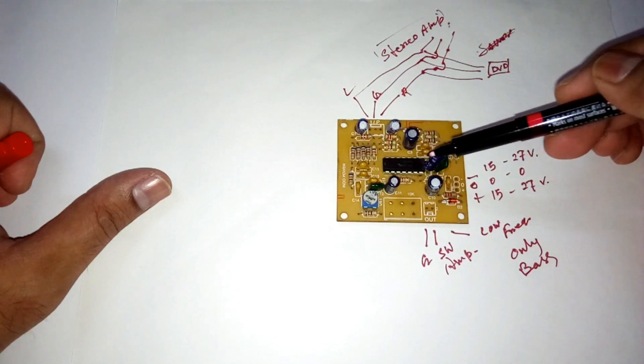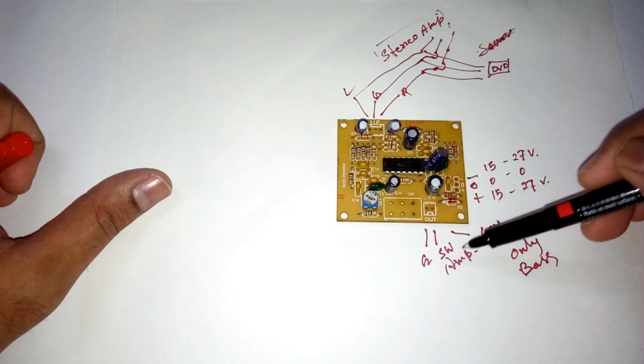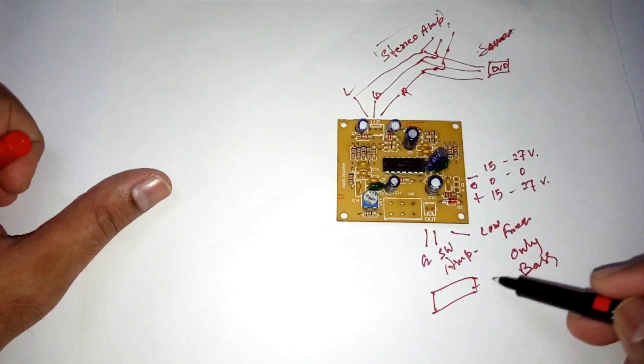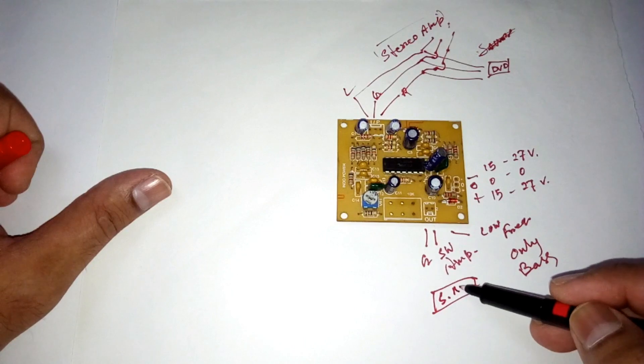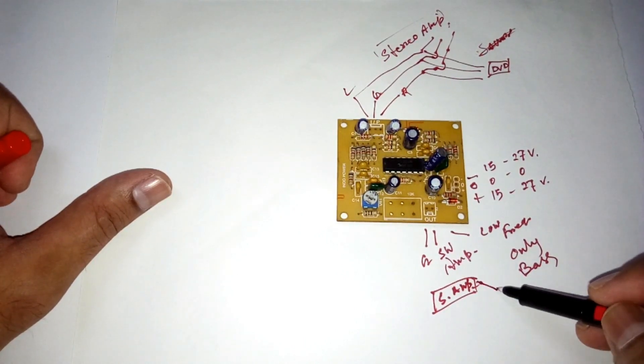That's it. So here from the stereo amp you get the stereo output on two channels, and here the stereo input. And after filtering, you'll get only bass which is going to your subwoofer amp, and from here...